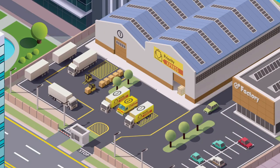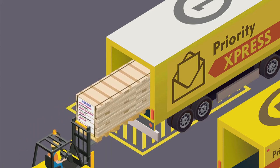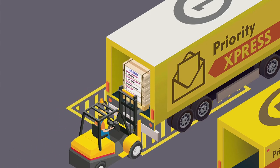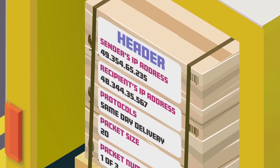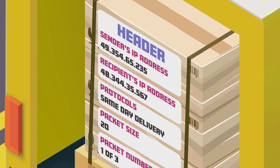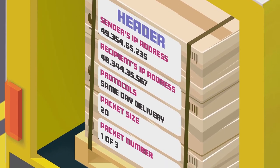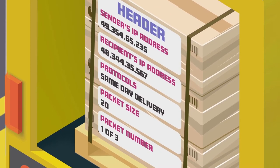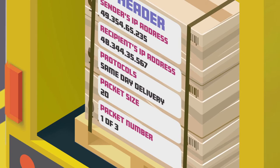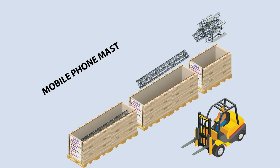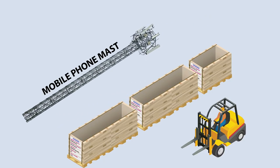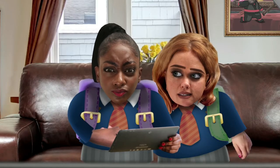Each packet is made up of the header and the payload. The header contains both the sender's and the recipient's IP addresses, details of any protocols used, the size of the packet, and information about the total number of packets. This information will help you reassemble your order. You've got to put that mask together yourself. Good luck with that.